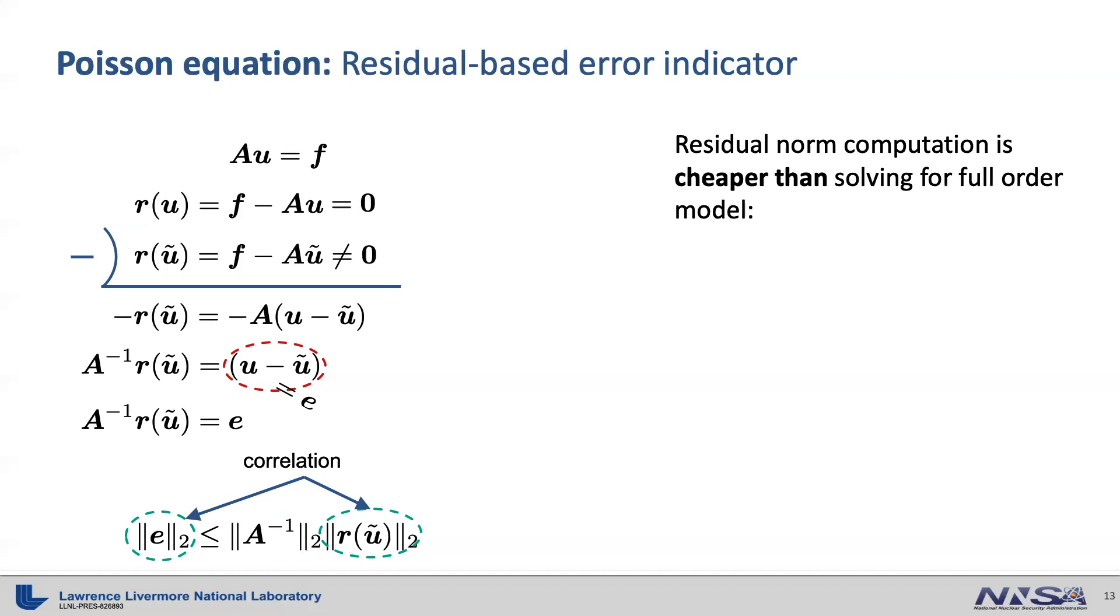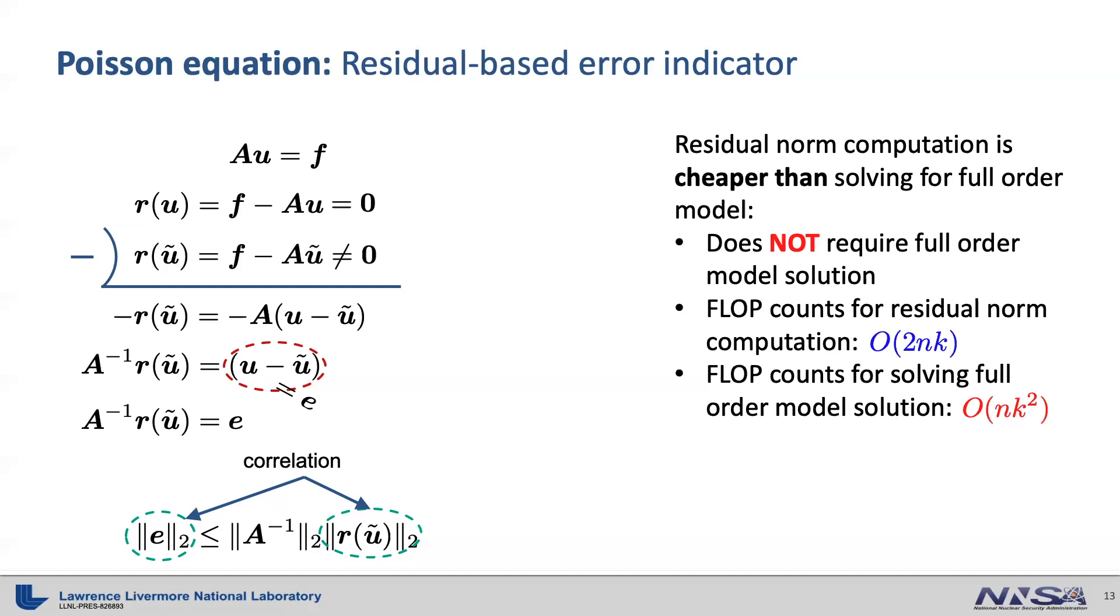Furthermore, computing residual norm is a lot cheaper than solving the full order model. First of all, it does not require a full order model solution. The number of floating-point operations for the residual norm computation is O of n times k, where n is the full model size and k is the bandwidth of the matrix A.